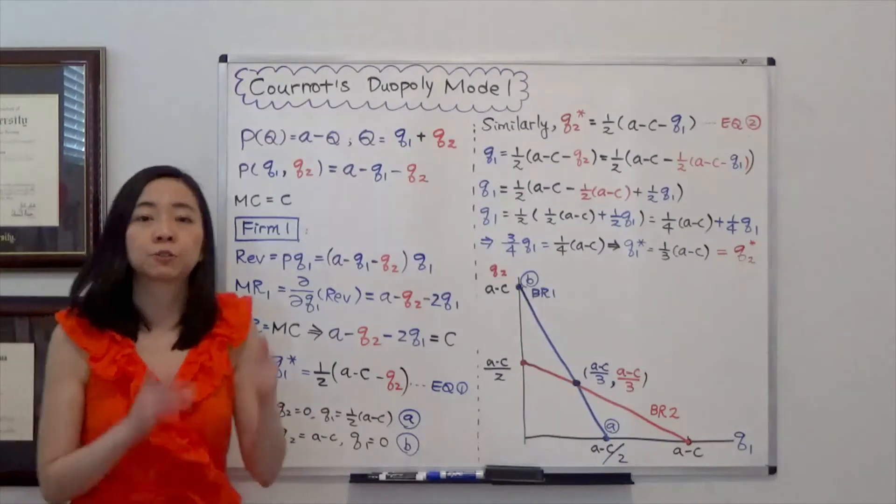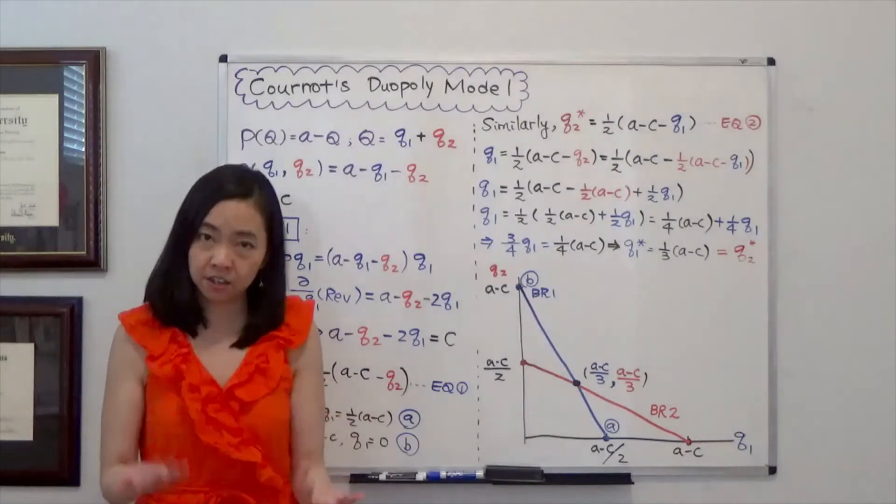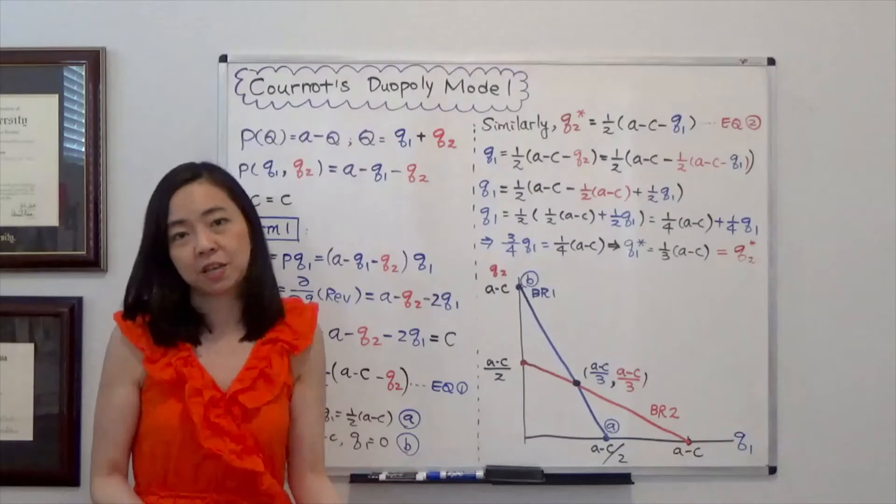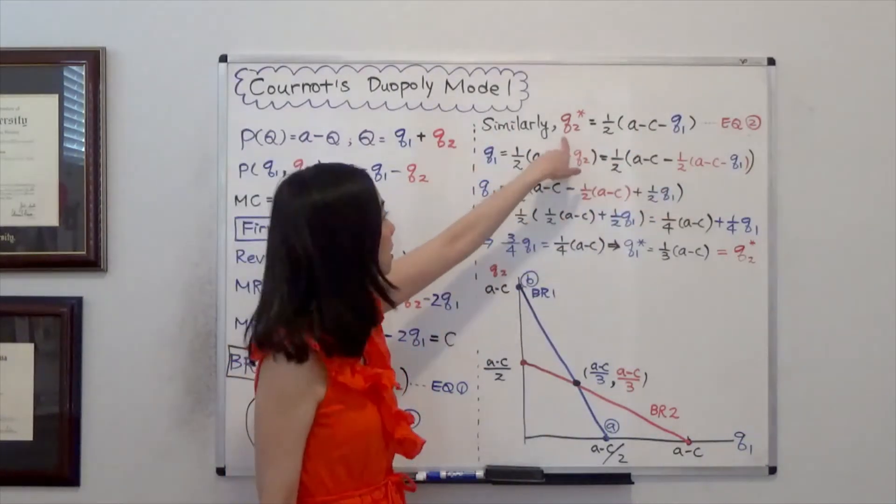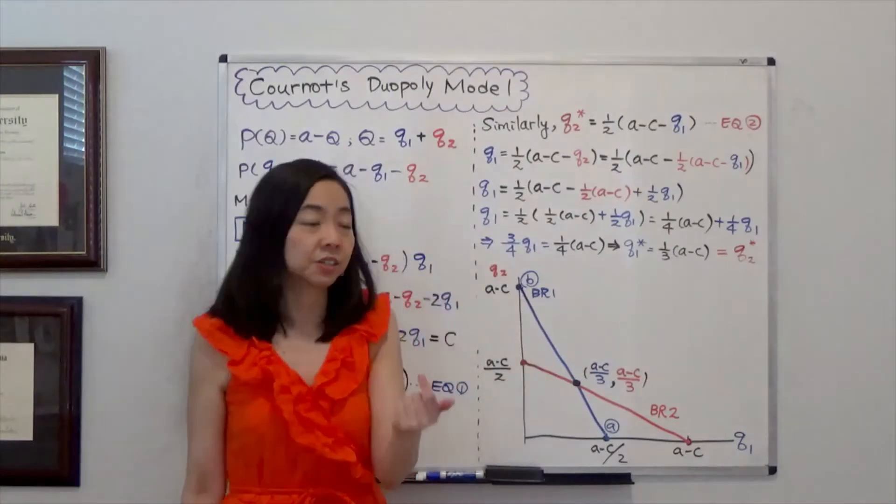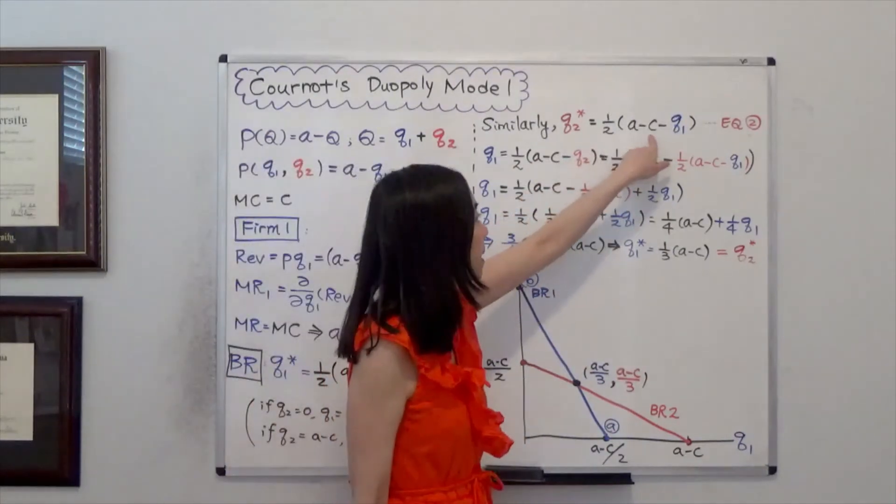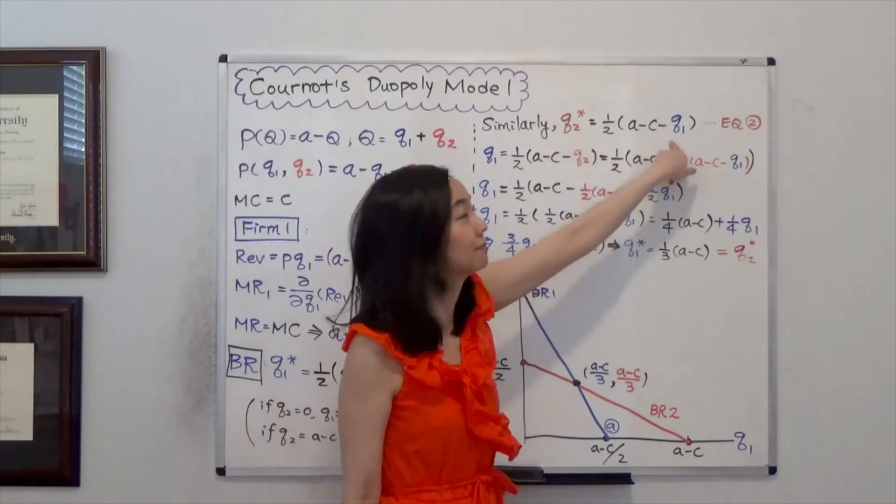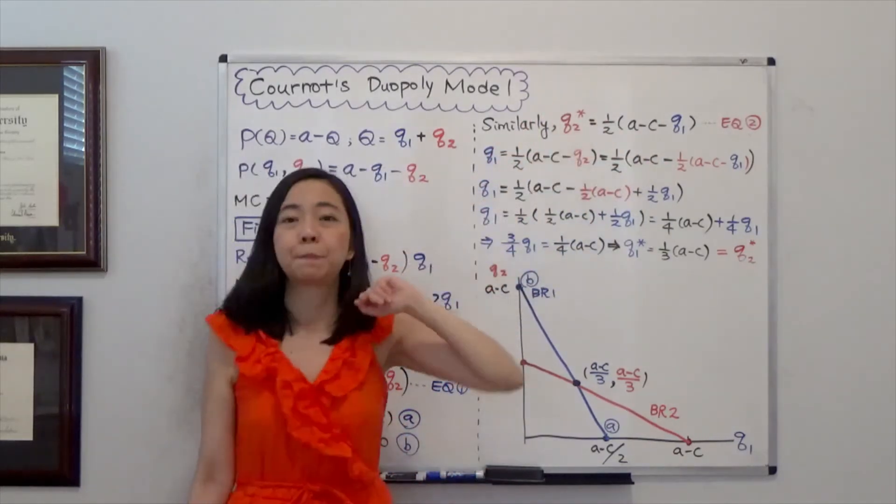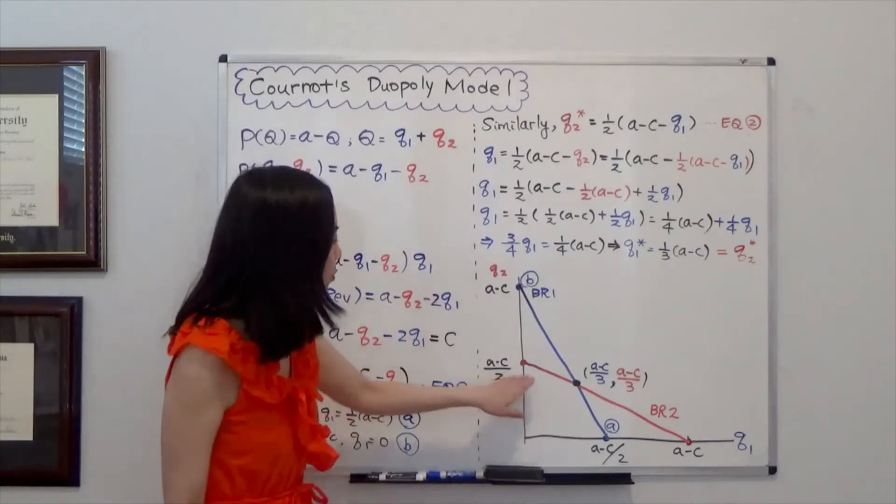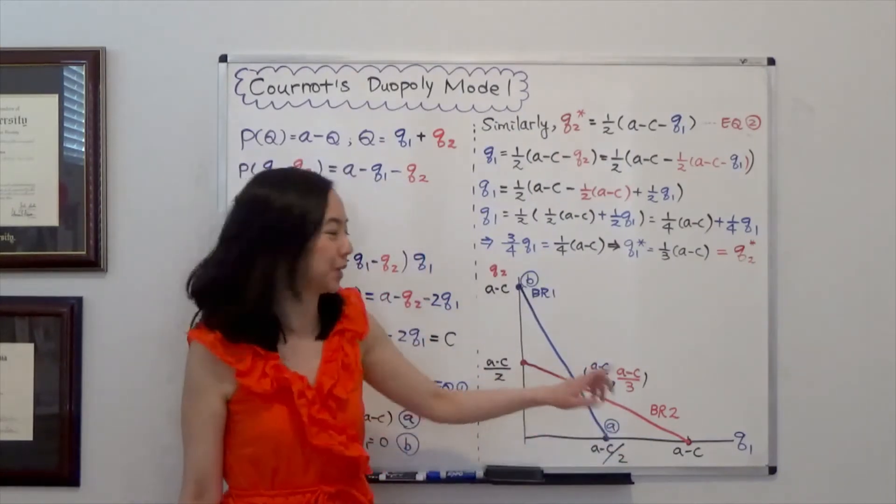Notice that because firm 1 and firm 2 are identical so firm 2 is doing exactly the same calculation. So that brings us to equation 2 here. Q2 star is equal to a half times A minus C minus Q1. So that's the best response function for firm 2. And you can also draw the best response curve for firm 2 which is the red line here. We call that BR2.